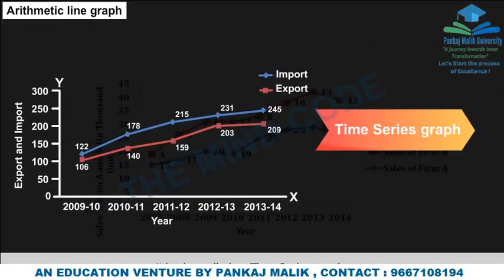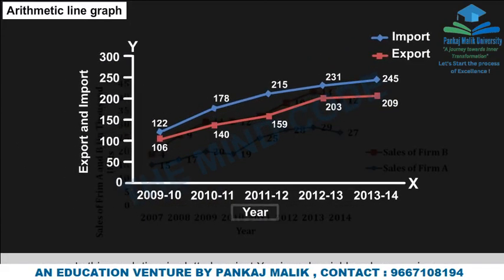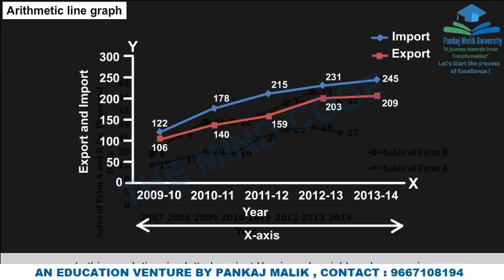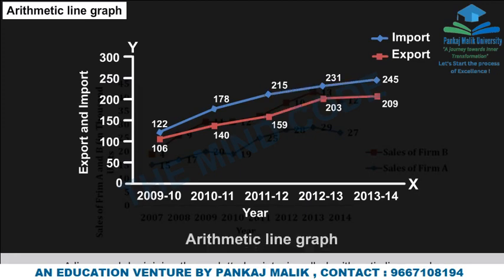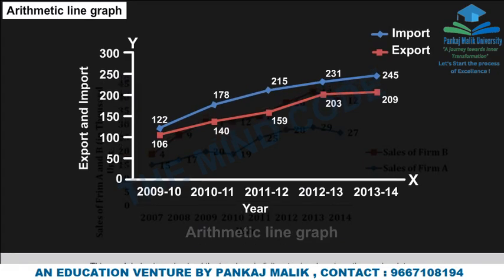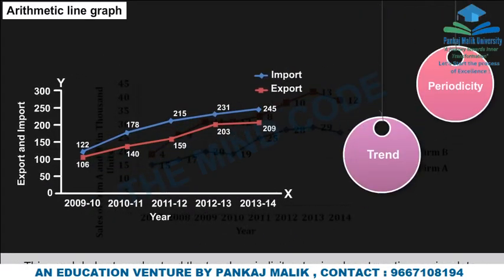Arithmetic Line Graph: Also called a time series graph, in this graph time is plotted along the x-axis and variables along the y-axis. A line graph joining these plotted points is called an arithmetic line graph. This graph helps to understand trends, periodicity, etc. in long-term time series data.